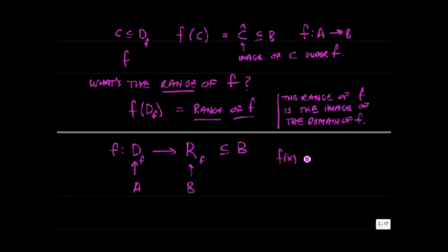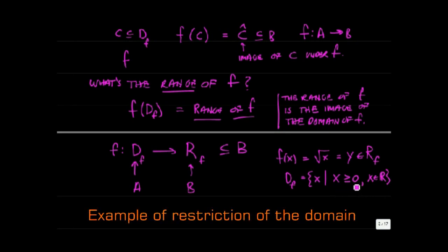For example, if you wanted to define the function f of x equals the square root of x and that's equal to y in the range of f. If we were dealing with real numbers, the square root of f is not defined for negative numbers. So the domain of f, if you wanted to be as general as possible, is the domain of f is the set of real numbers x is greater than or equal to zero and x is an element of the real numbers.